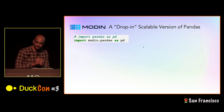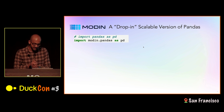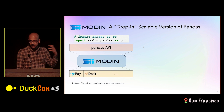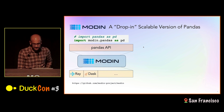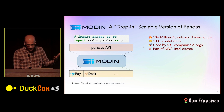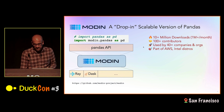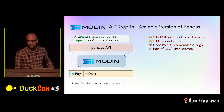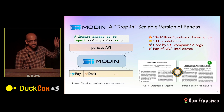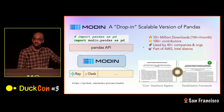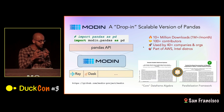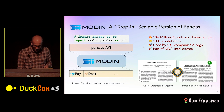Enter Modin. Modin is a project we've been working on for the last few years — an open source drop-in replacement for pandas that supports the pandas API and runs it on distributed computing frameworks like Ray and Dask. It's had a lot of adoption, around 1 million downloads a month — not quite DuckDB level, but pretty good. Hundreds of contributors, and it's also shipped as part of the AWS and Intel data science distributions. All of this is thanks to research we did at UC Berkeley to figure out how to take the dataframe data model and distill it down to a core set of operations that can be parallelized.